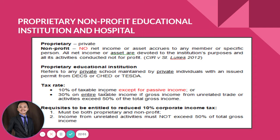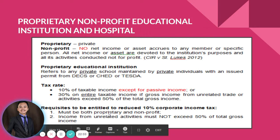The 10 percent rate applies to taxable income except for passive income. The 30 percent rate applies to the entire taxable income if gross income from unrelated trade or activities exceeds 50 percent of total gross income. To be entitled to the reduced 10 percent rate, the corporation must be both proprietary and non-profit, and income from unrelated activities must not exceed 50 percent of total gross income.